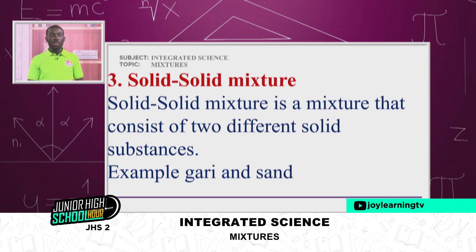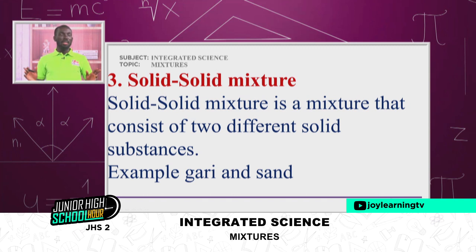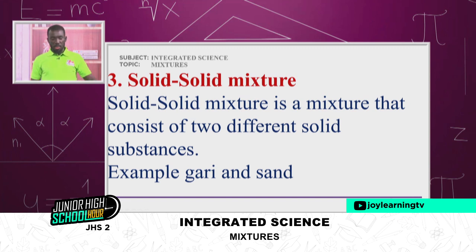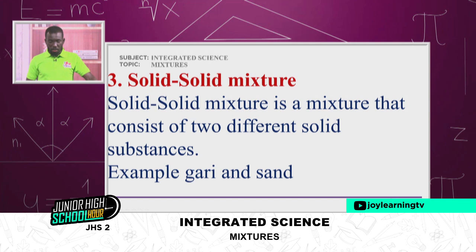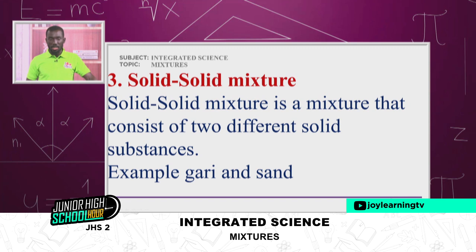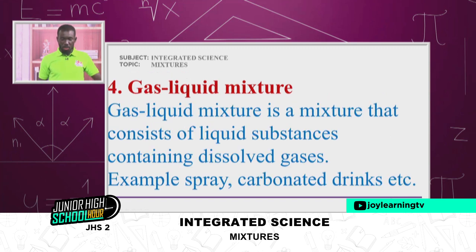We have solid-solid mixture. I gave a clear example as pebbles and chalk pieces. A solid-solid mixture is a mixture that consists of two different solid substances. An example we have here: garry and sand.